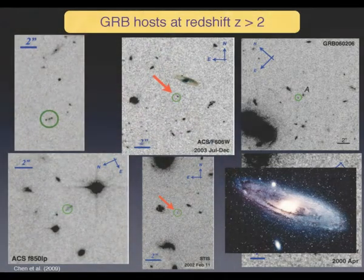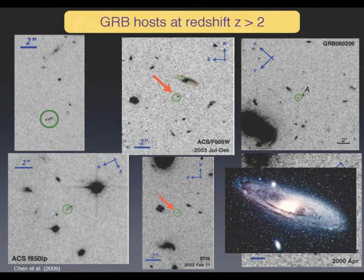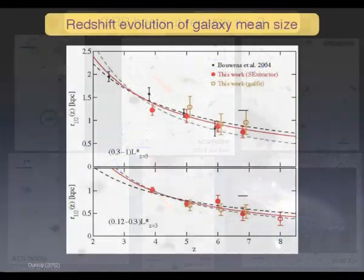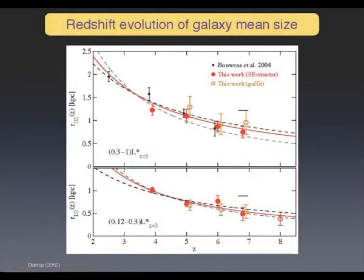About the size at high redshift — they can be very small, and that's one reason why it's hard to study them. If you take Andromeda and shift it to redshift about two, it will be much larger than a GRB host galaxy. But the universe itself is changing: this plot shows how much the half-light radius is changing in galaxies from redshift 8 to 2.